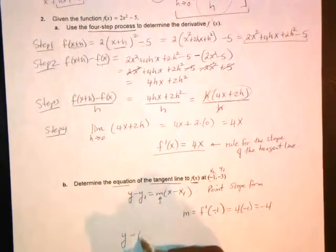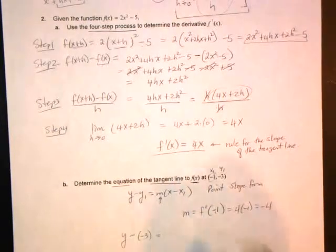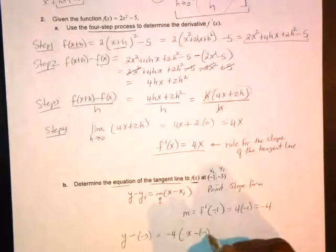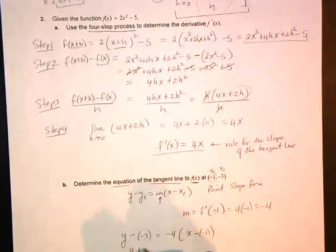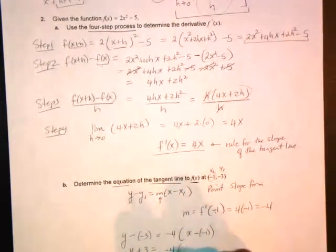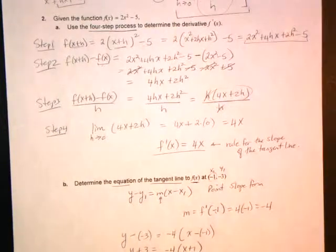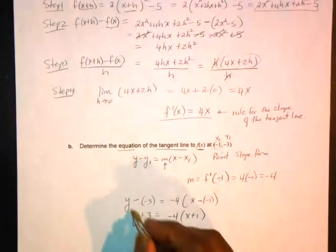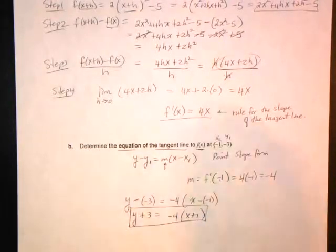So it's y minus y1, which is negative 3, equals m, which is negative 4, times x minus x1, which is that. Clean it up. So you get x plus 1. You could stop here. If you want to get y by itself, you can. But as far as I'm concerned, this is good enough.